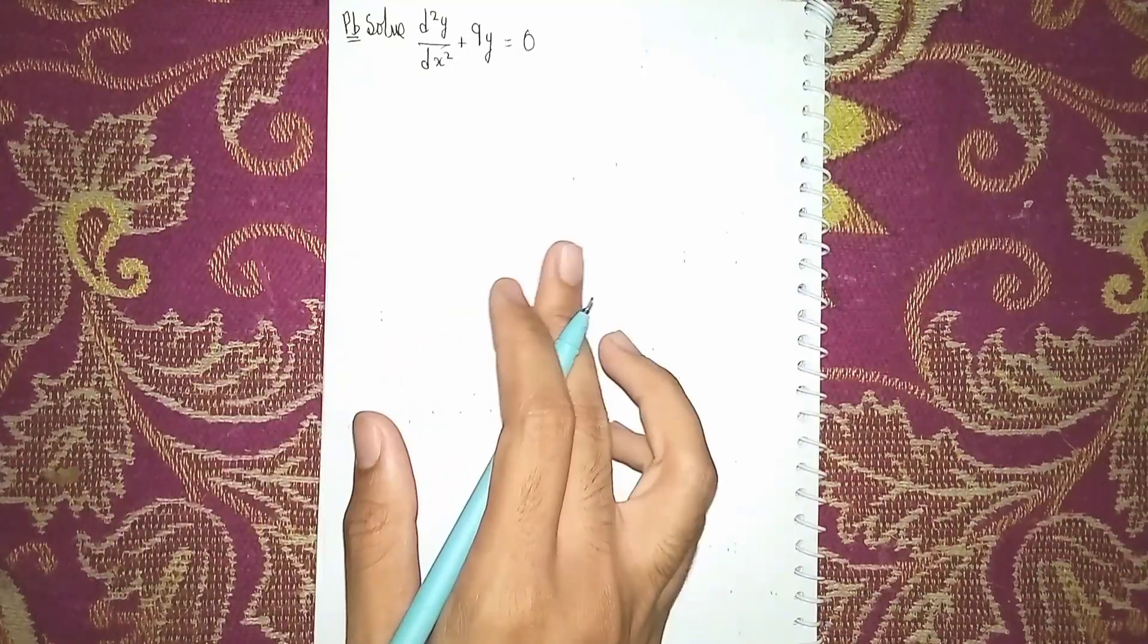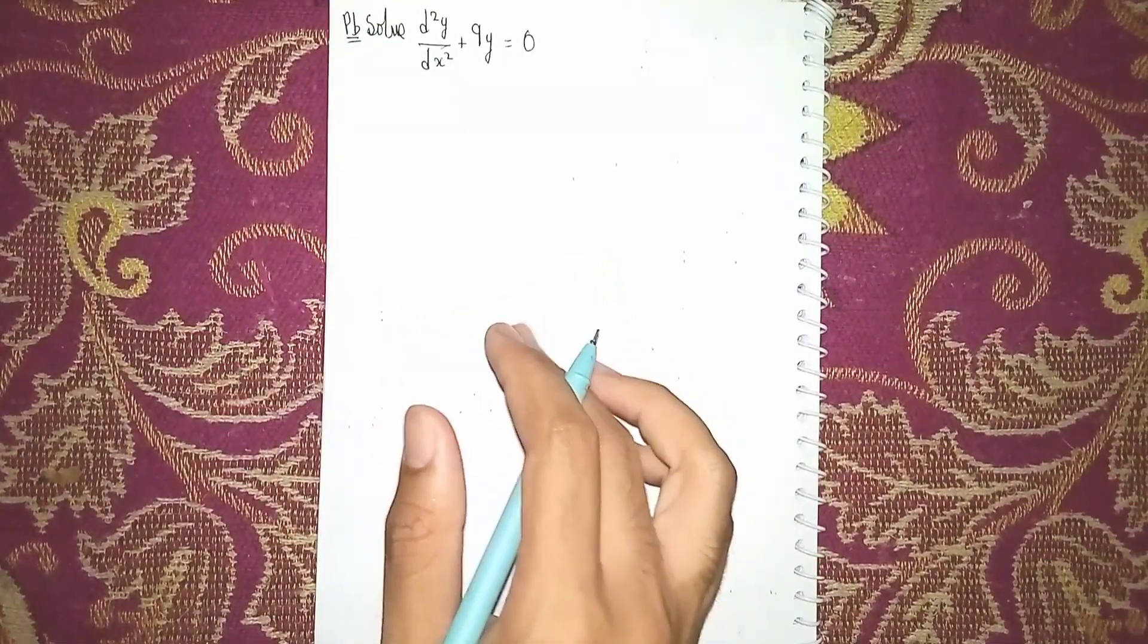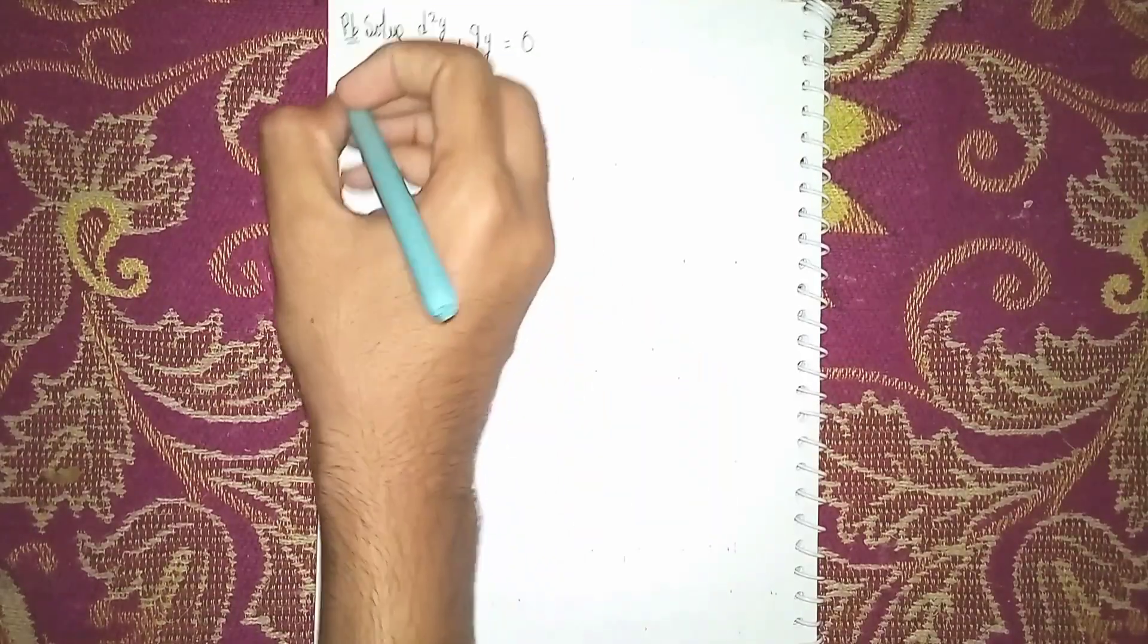Hello today and welcome back to my channel. Today's question: solve d²y/dx² + 9y = 0. This is a homogeneous linear differential equation, so first solution.